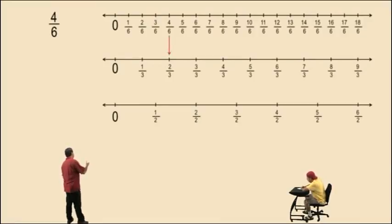We see that 4 sixths is equivalent to the fraction 2 thirds because they have the same location on the number line. But notice here, 4 and 6 have a common factor of 2, meaning they're even, so they both can be divided by 2, right?